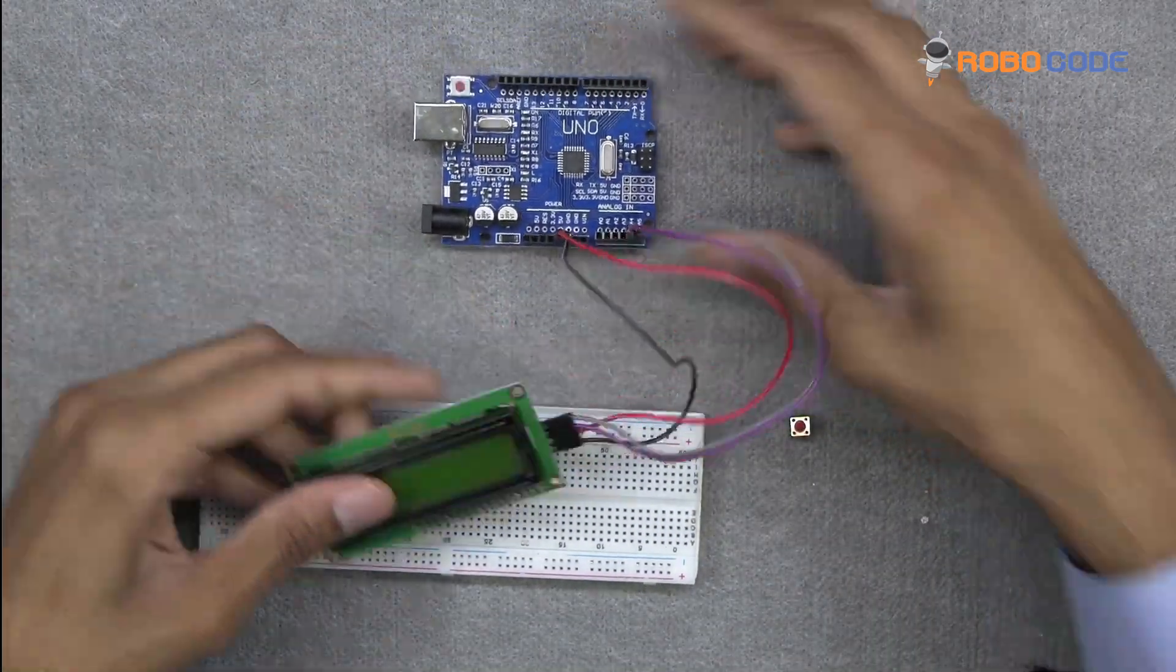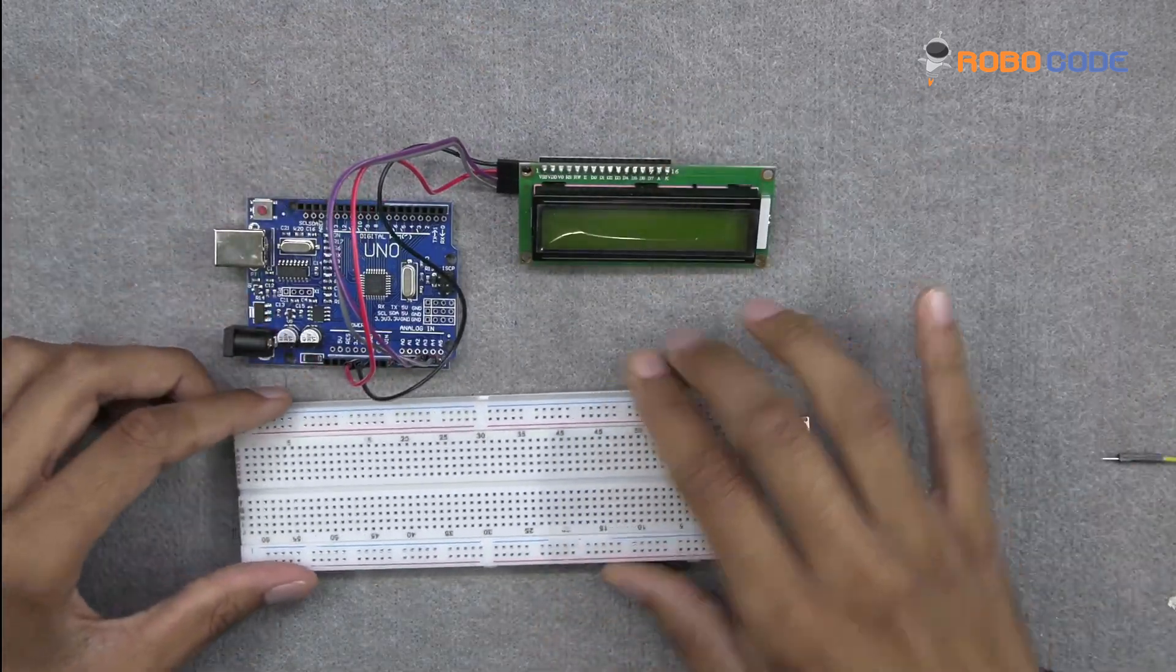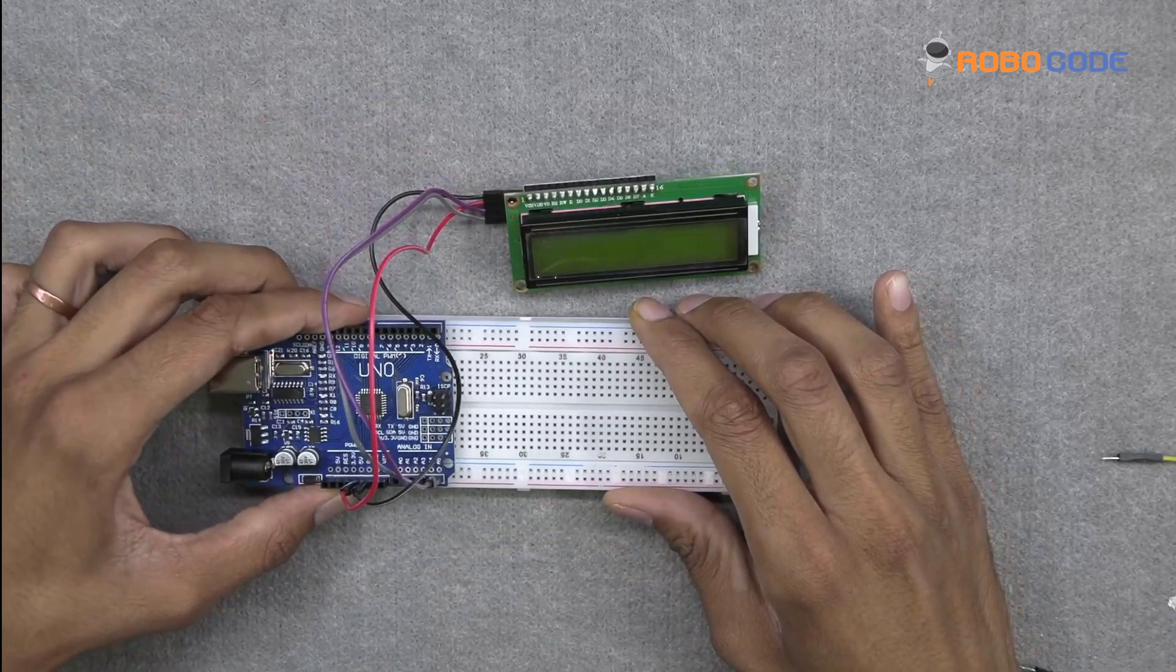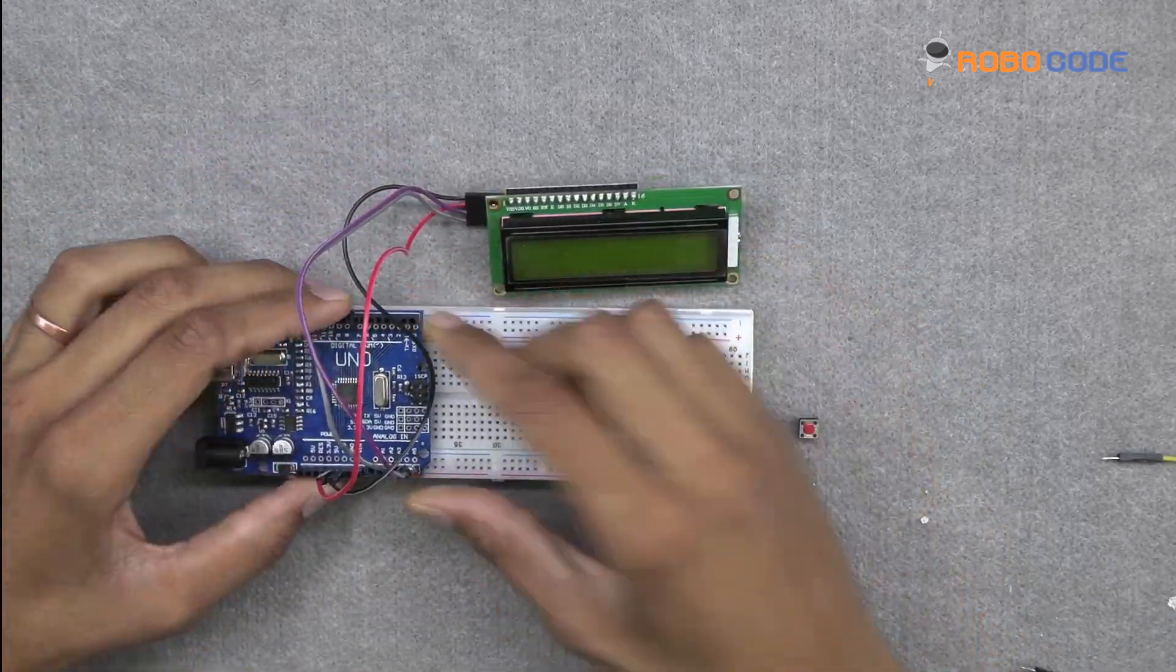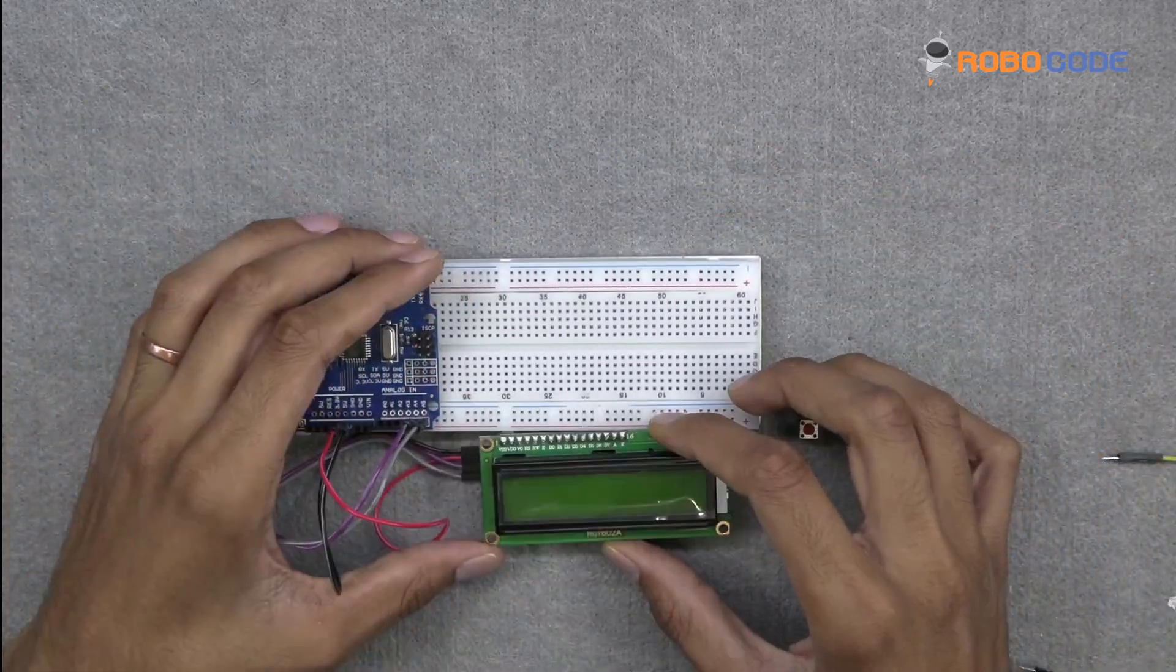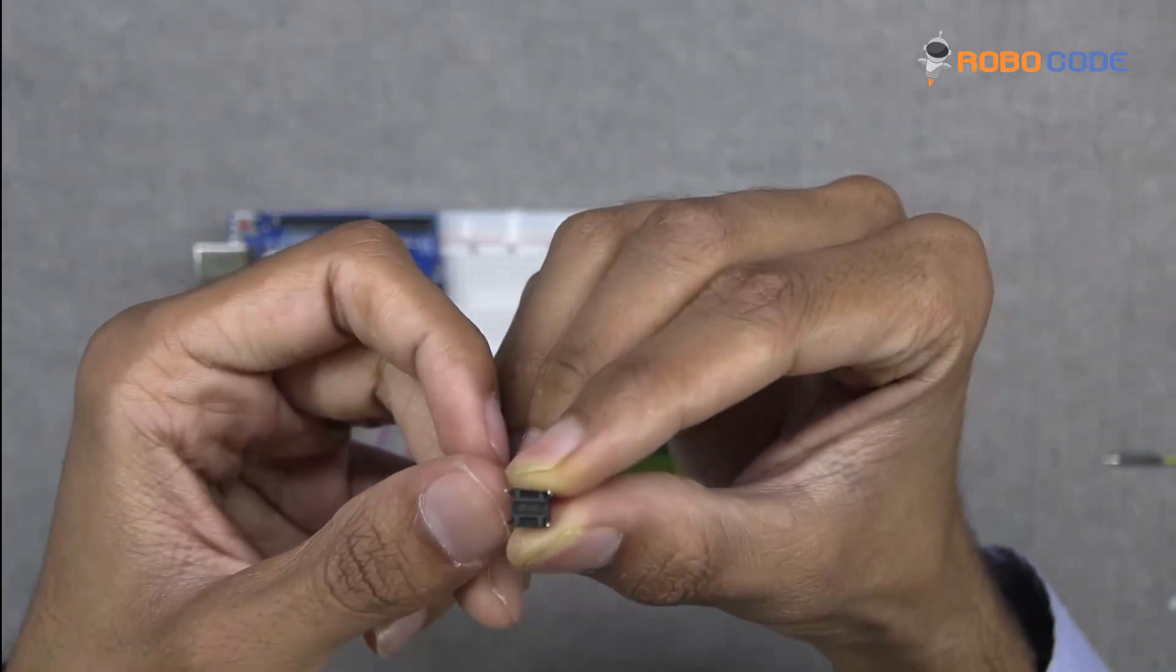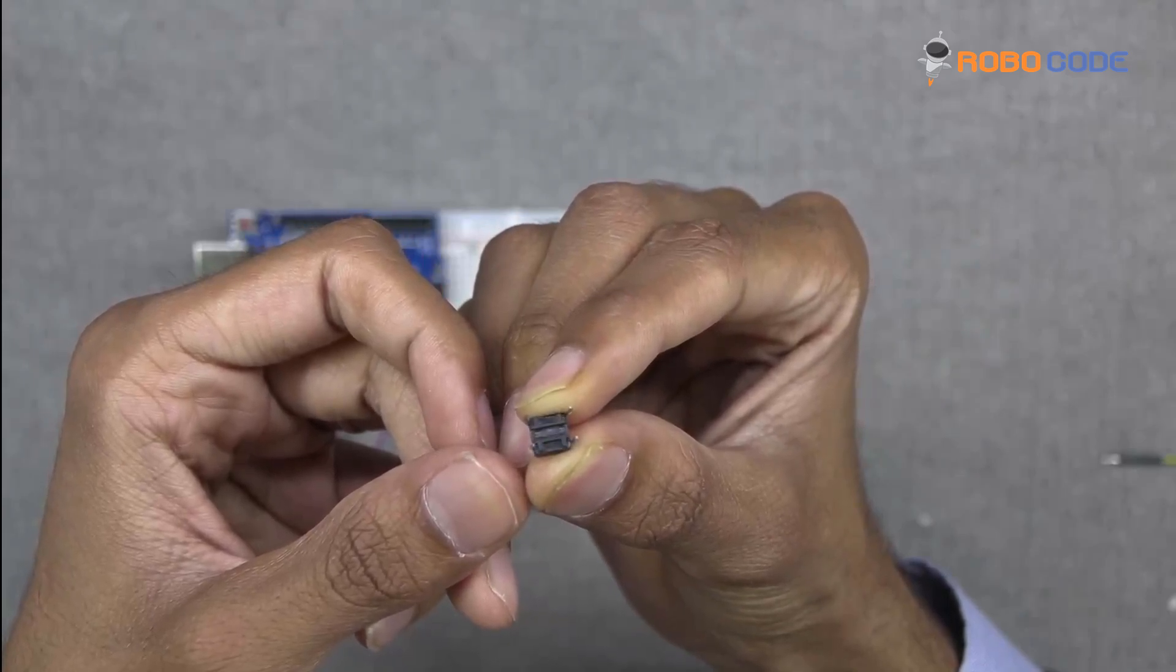Once that is done, we will arrange the Arduino Uno board on the breadboard and the 16x2 LCD display as you can see in this video. Once that is done, we'll take the buzzer and insert it in the breadboard.